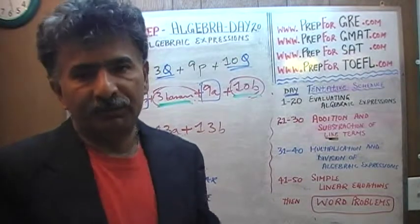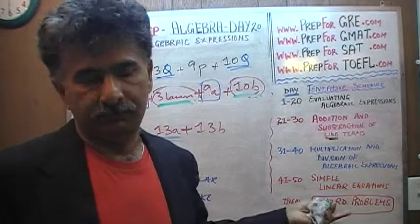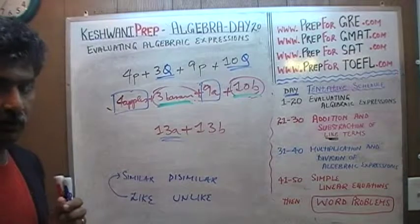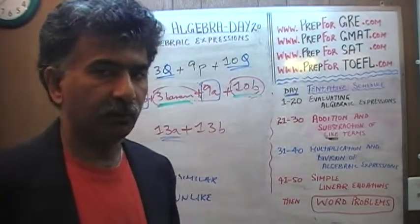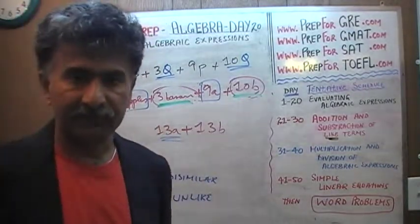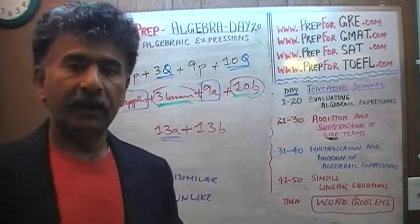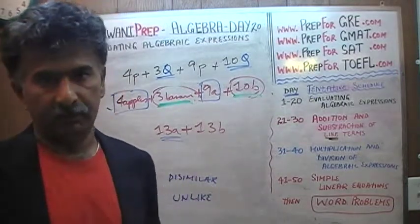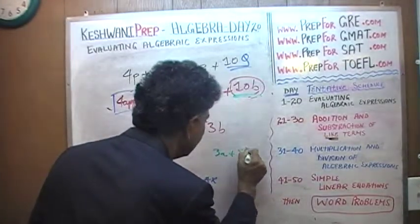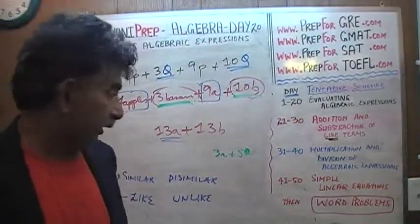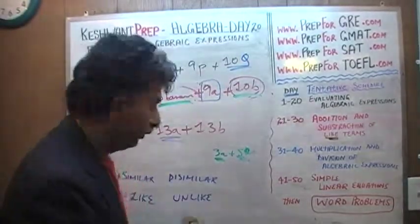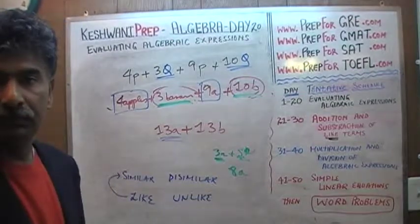That's what like terms and unlike terms means. Apples and bananas are unlike things — we cannot add them. A's and B's are not apples and bananas; these are some numbers. A represents a number and B represents a number, we just do not know what those numbers are. So if we have 3A plus 5A, whatever A is, it is 8 times that quantity — 8 A's, whatever A happens to be.